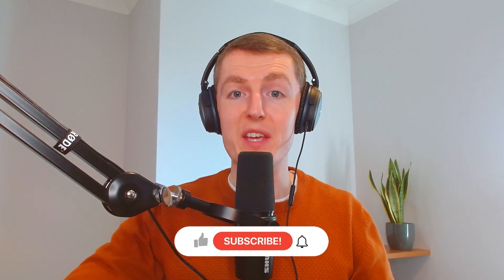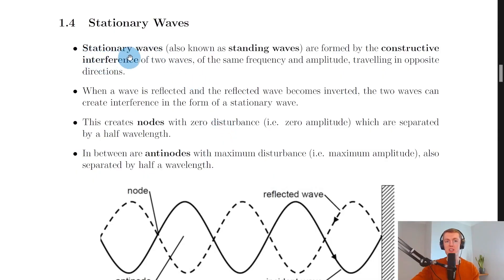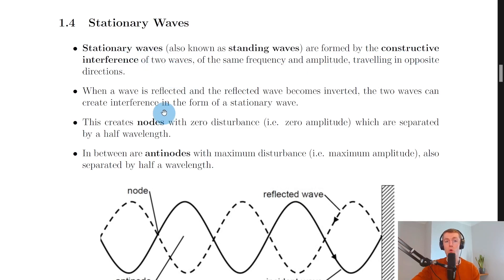Welcome back. In this video we're going to look at stationary waves, also known as standing waves. Stationary waves are formed by the constructive interference of two waves of the same frequency and amplitude traveling in opposite directions. When a wave is reflected and the reflected wave becomes inverted, the two waves can create interference in the form of a stationary wave.